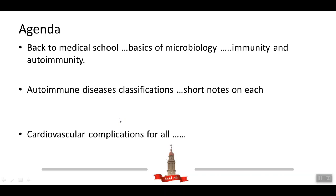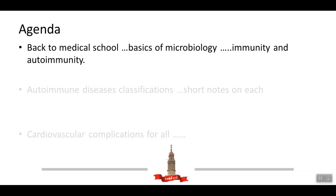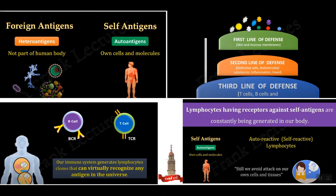Our agenda today will include three main items. First, we will discuss basics of microbiology and immunology — what is immunity and what is autoimmunity, as this is the pathogenesis of most diseases we will discuss. Second, we will cover autoimmune disease classification with short notes on each. Finally, we will discuss cardiovascular complications and a general scheme for management of these patients.